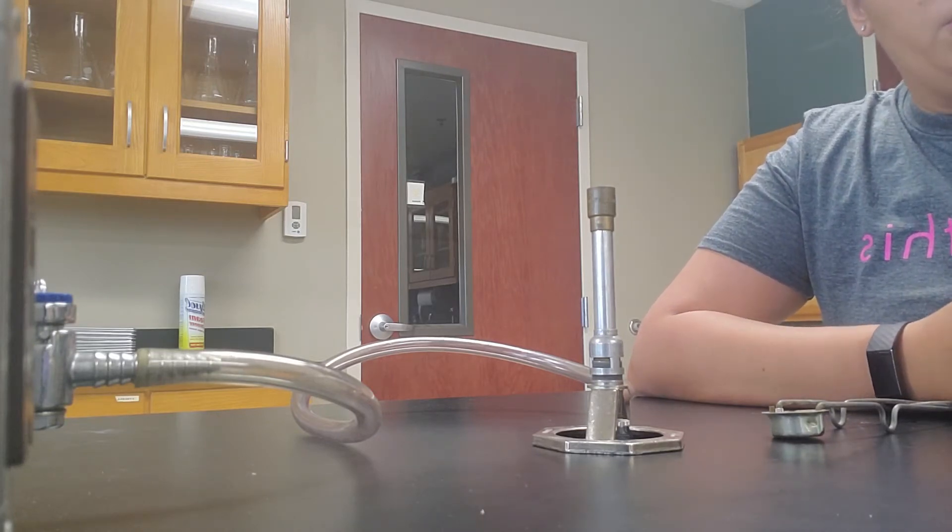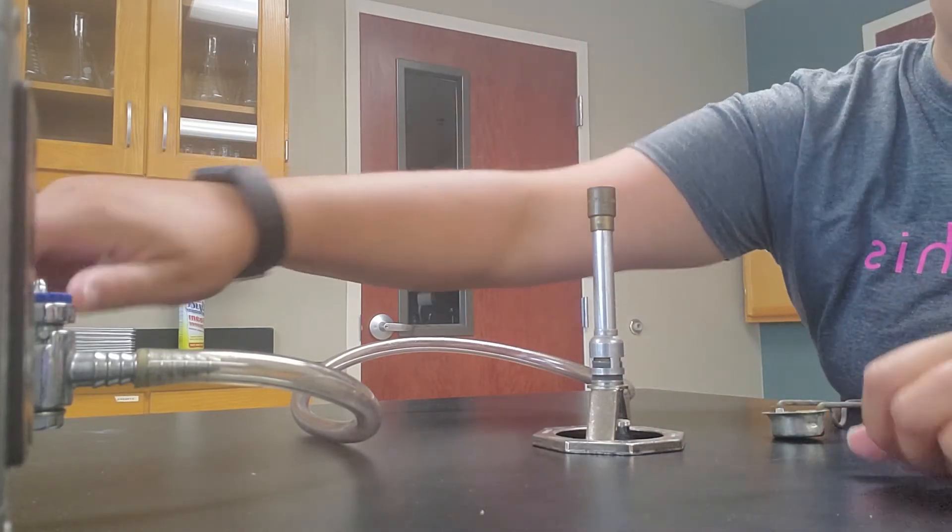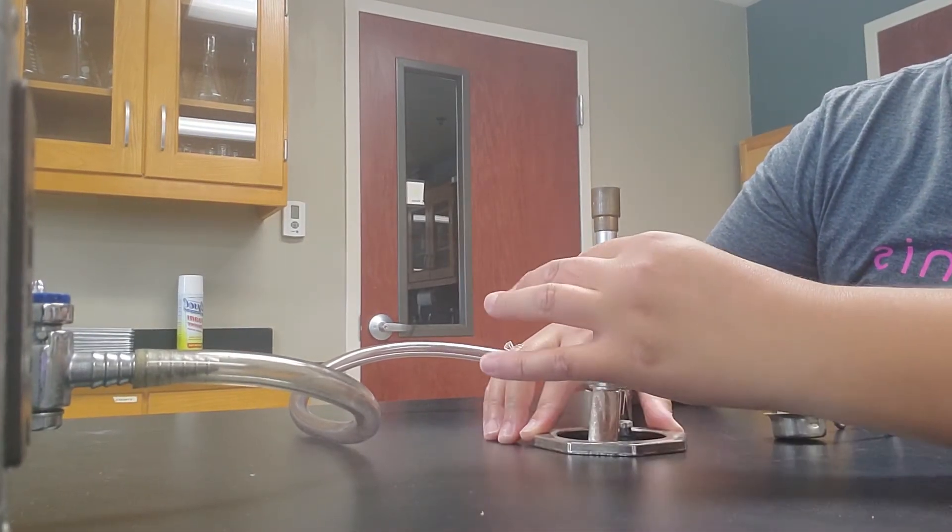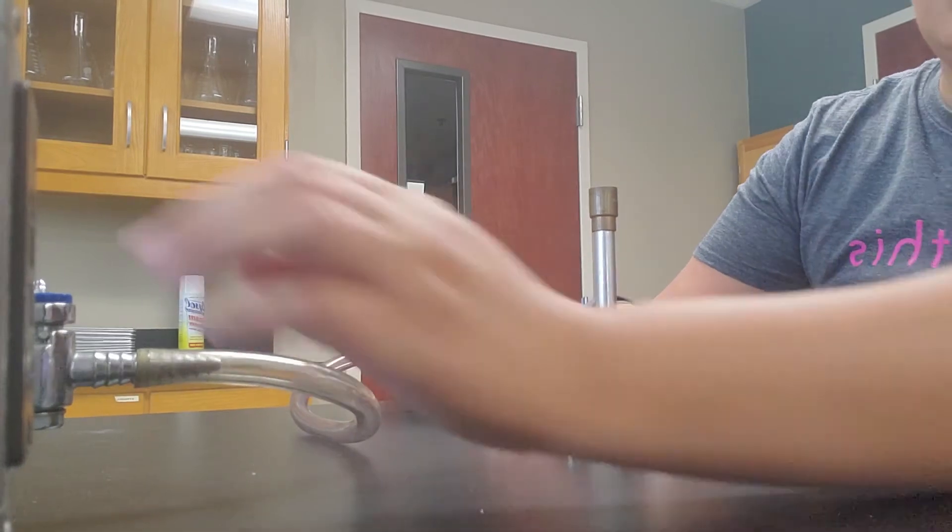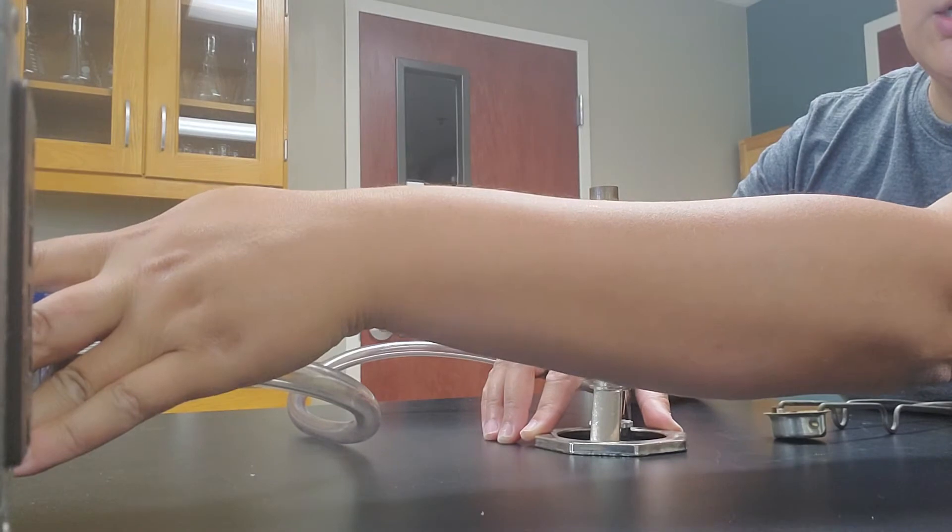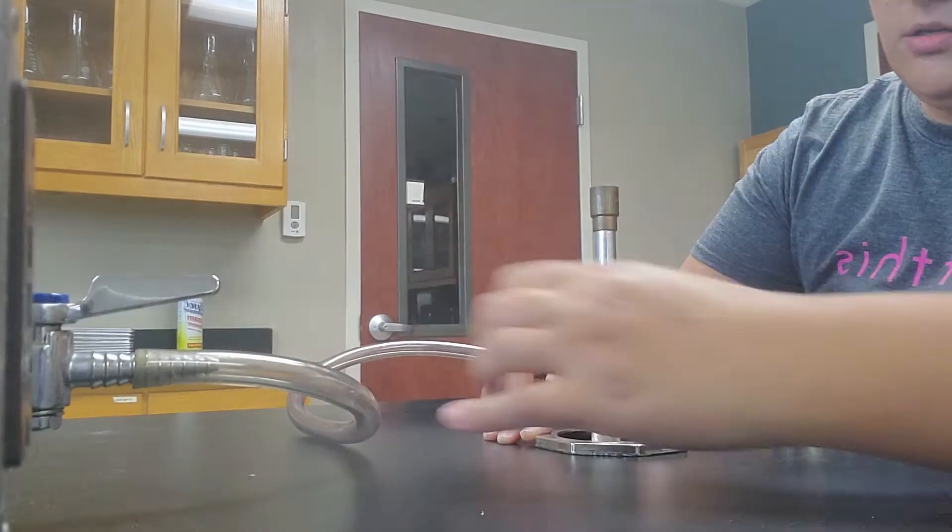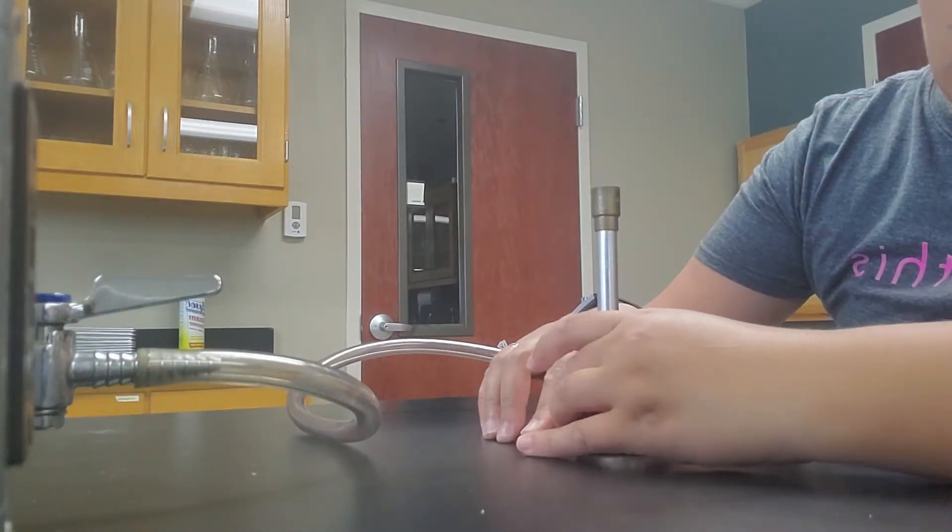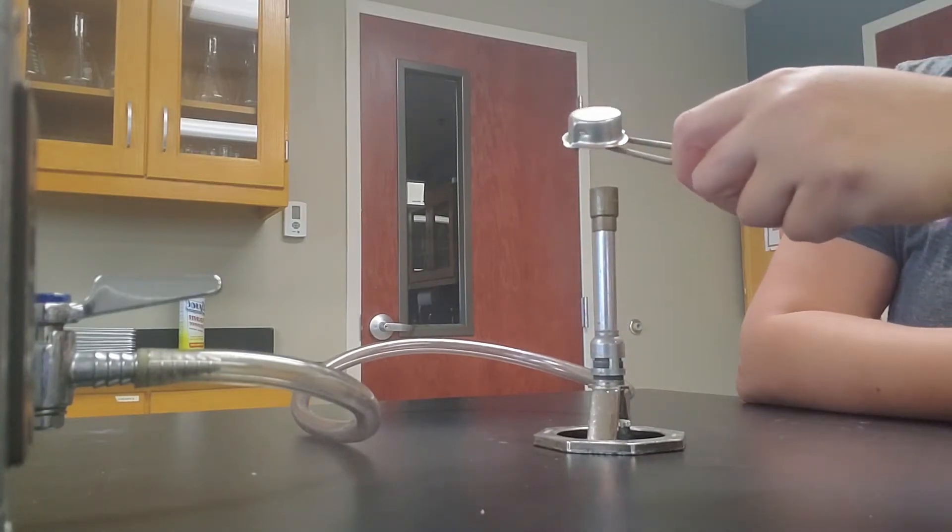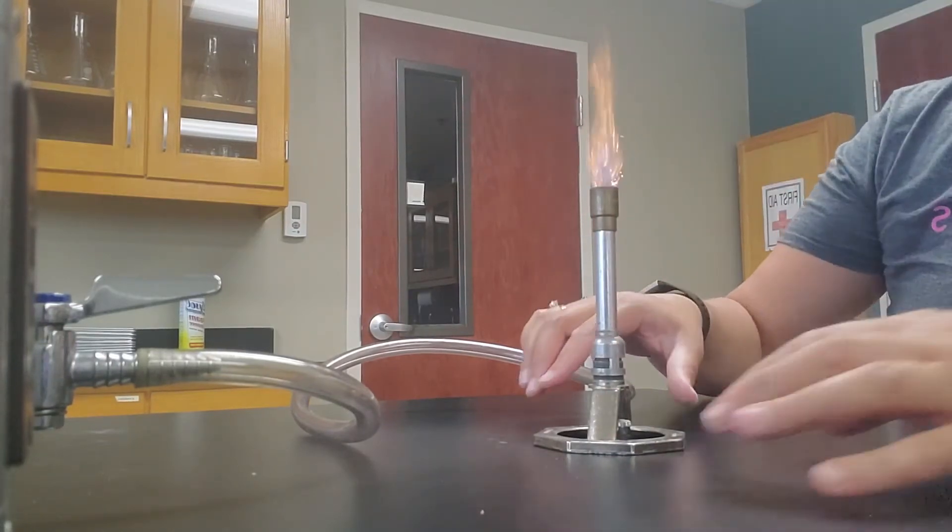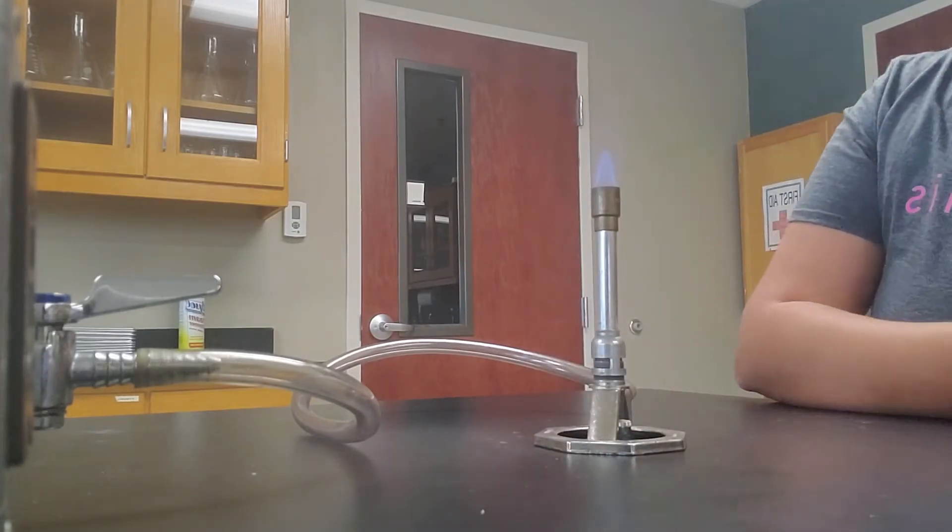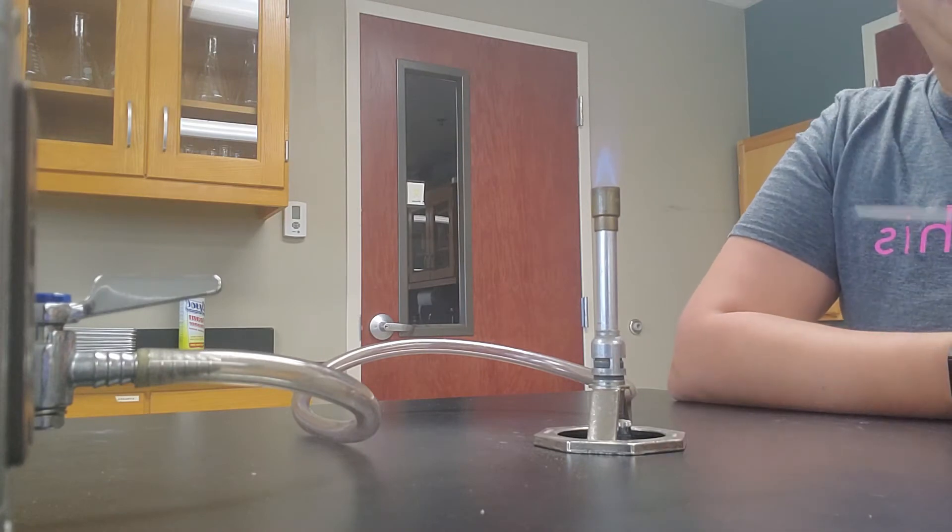So the first thing that you're going to want to do is actually turn on your Bunsen burner. So first thing is, this is going to control gas and air. So you don't want that to be too open, and then you want to turn on the gas itself. You should kind of hear it a little bit. Once you hear it, then you can actually start the flame. So the goal here is to get that pretty blue flame because that's going to be the hottest part of the flame.